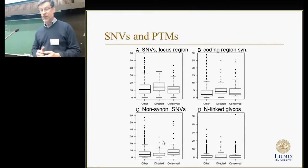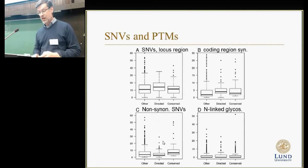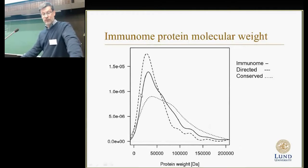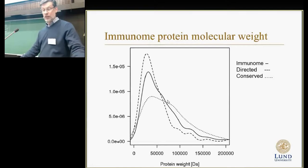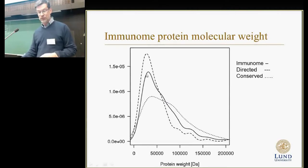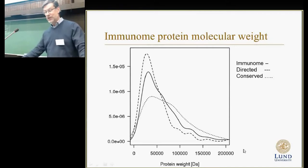We did lots of different things, and here are some results. It may look that there are hardly any differences, but actually all the results here are statistically significant. Just looking at the molecular weight of the proteins: the directed proteins coded by genes under directed evolution have a clear peak below 50,000 daltons, whereas the conserved proteins have a different shape and can be much larger.